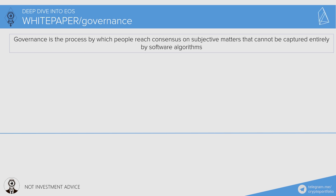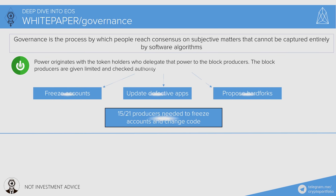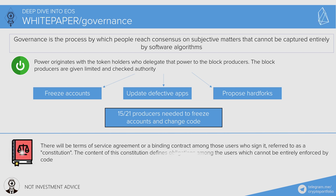How important is governance? Absolutely important. Governance is the process by which people reach consensus on subjective matters that cannot be captured entirely by software algorithms. Power originates with token holders who delegate power to block producers. Block producers are given limited and checked authority to freeze accounts, update defective apps, and propose hard forks. 15 out of 21 block producers are needed to freeze accounts and change code. There will be a terms of service agreement — a binding contract called a constitution — among users who sign it, defining obligations that cannot be entirely enforced by code. Each time you make a transaction, you automatically sign the constitution of EOS.